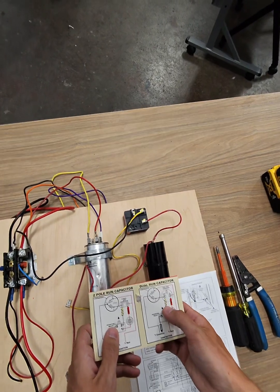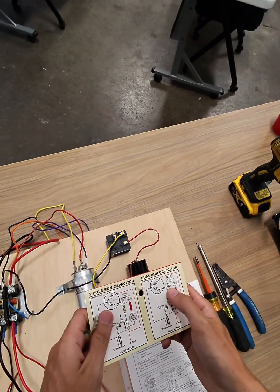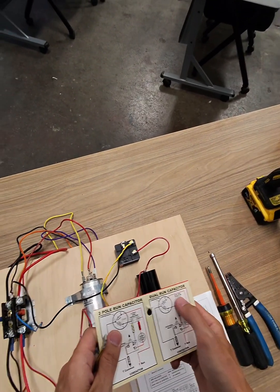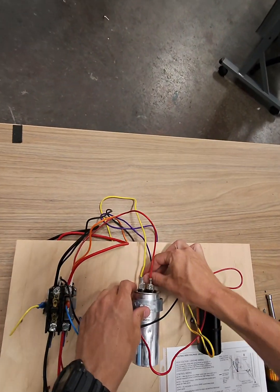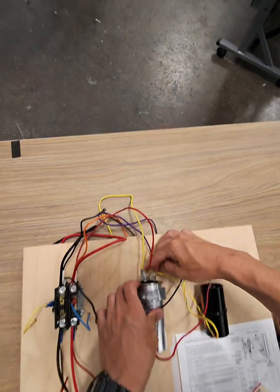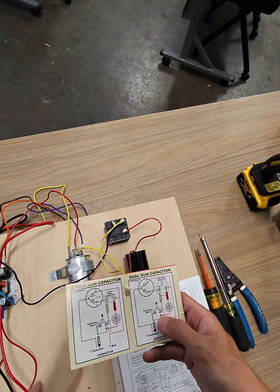Let's go next to the striped wire. So our striped wire is going to go to Herm on the dual-run capacitor. So it will go on the Herm over here along with the compressor wire.